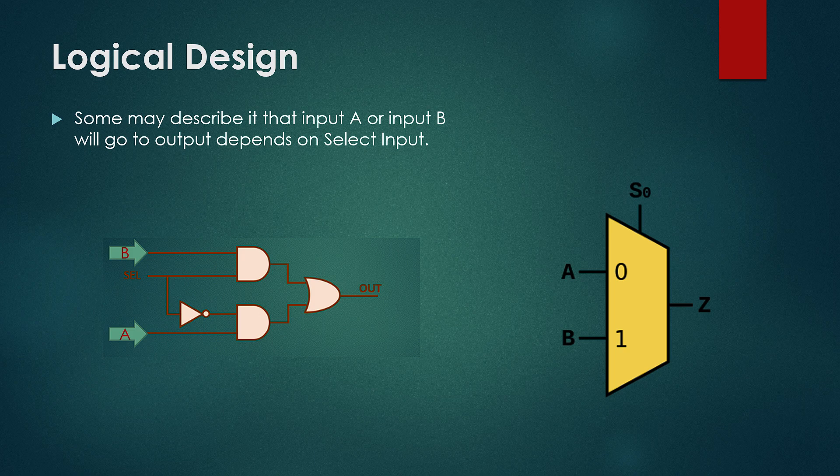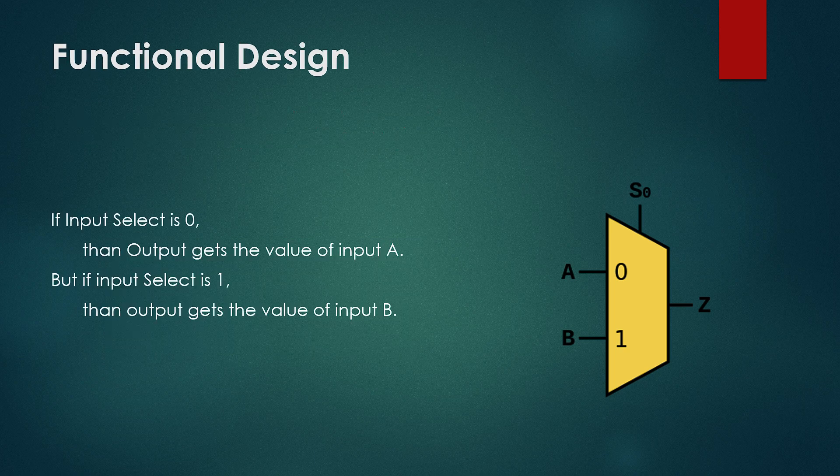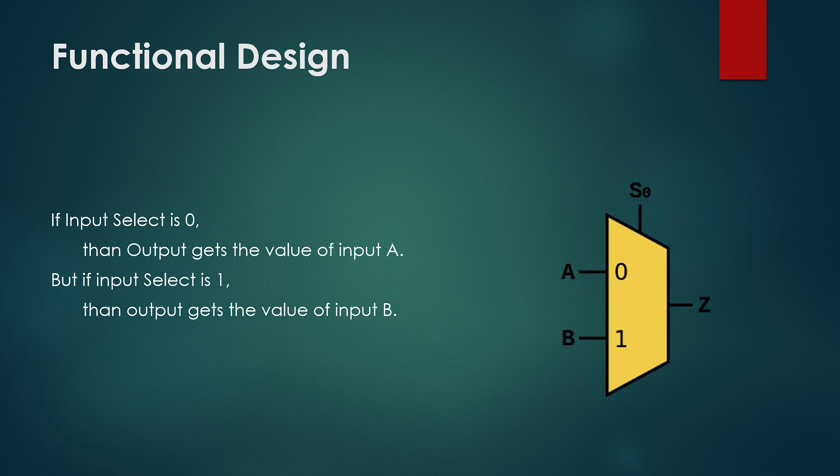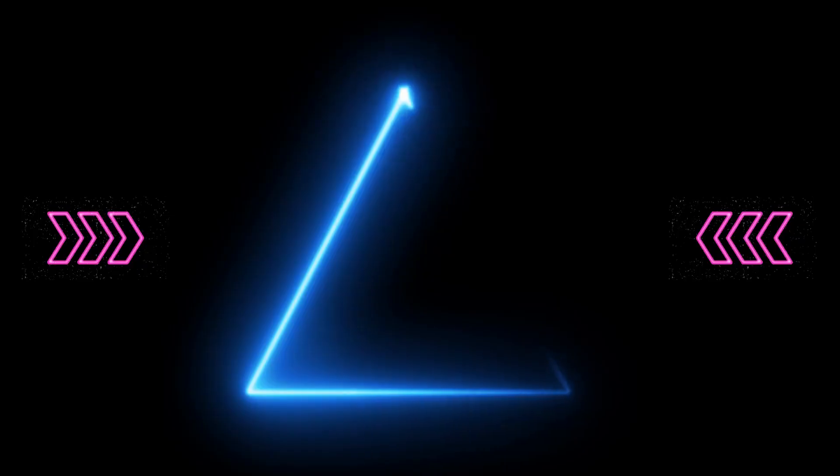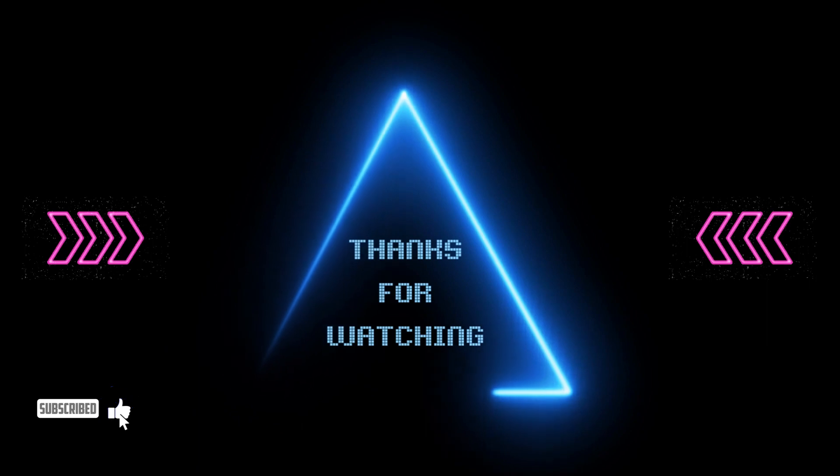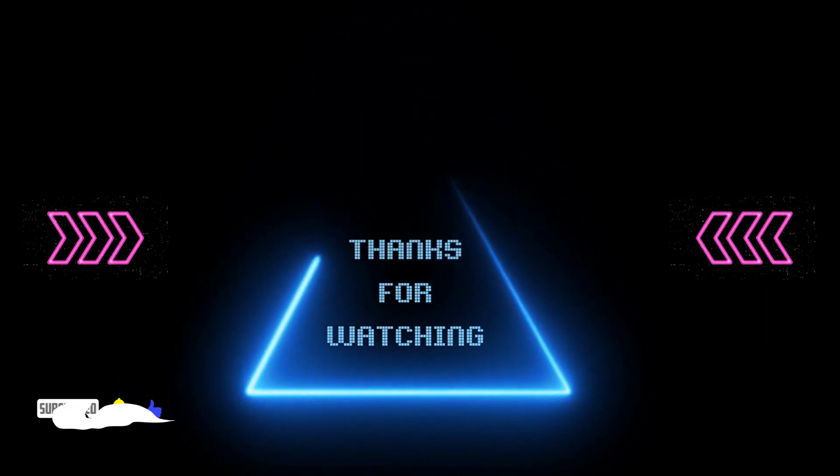So here HDL comes into the picture. In this case, we would describe the behavior as: if input select is 0, then output gets the value of input A. Else, if input select is 1, then output gets the value of input B. And let's leave everything to the tool to design a system for this function. So as long as tools correctly implement this behavior, we really don't care about the logical diagram tools created for us. We simply want a digital system that behaves like we described it to behave. If you found this video helpful, please give it a like and leave a comment below, and don't forget to subscribe for regular updates.